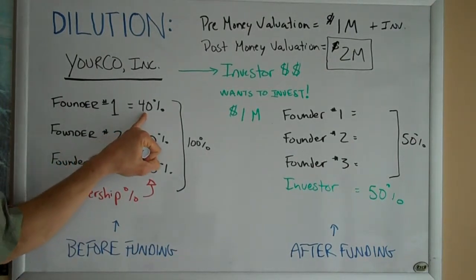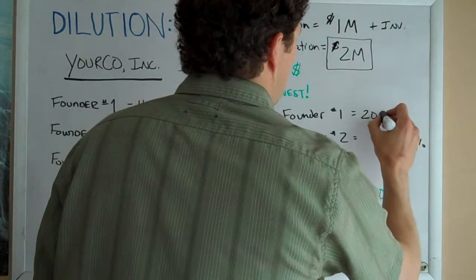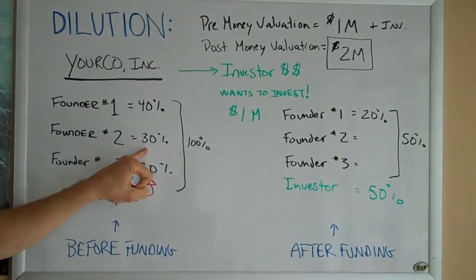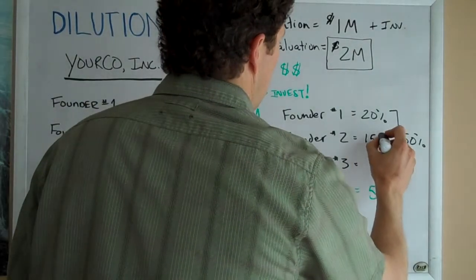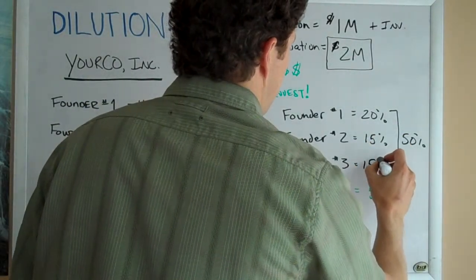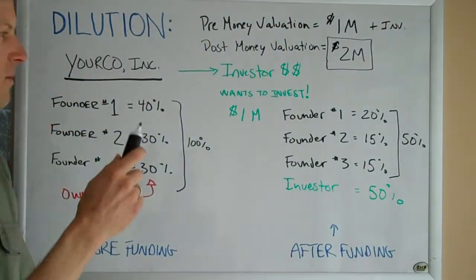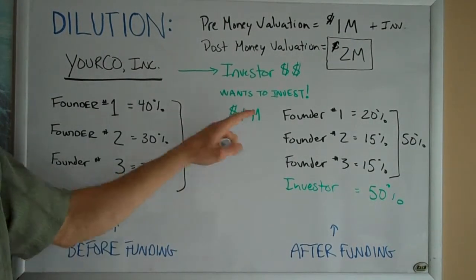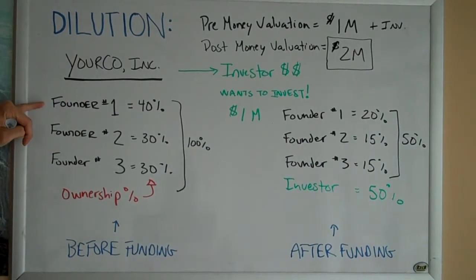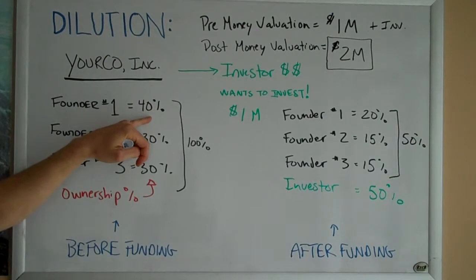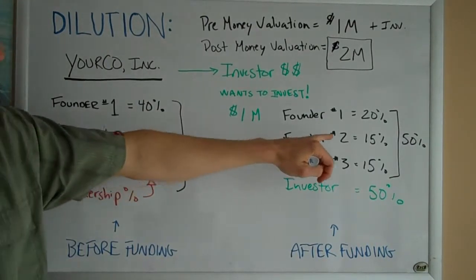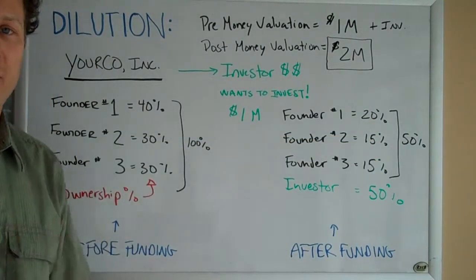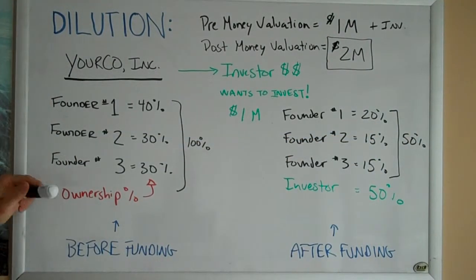Founder number one, who used to own 40%, now owns 20%. Founder number two, who used to own 30%, now owns 15%. Same for founder number three. If you add all these up they will add up to 100%. This is the concept of dilution — founder number one before the funding event had a 40% equity stake, and that decreased to 20% because they took on funding. Founders two and three were mathematically diluted by the same proportion.